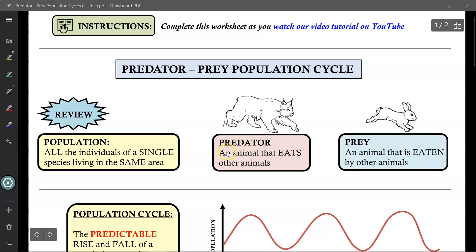A predator is an animal that eats other animals, while a prey is an animal that is eaten by other animals. This predator hunts and eats this prey.